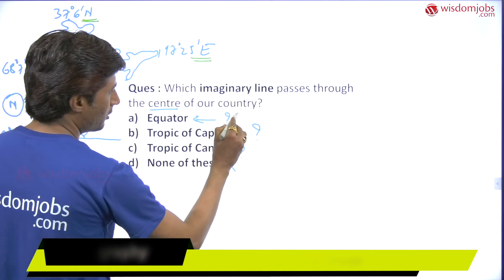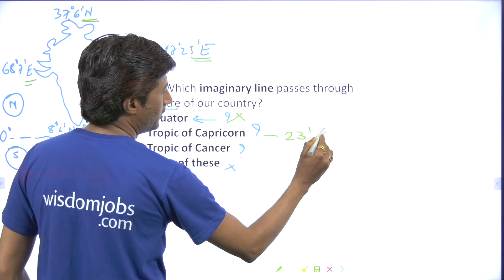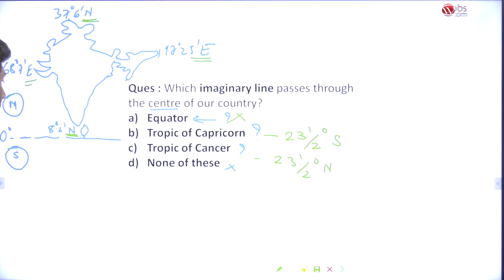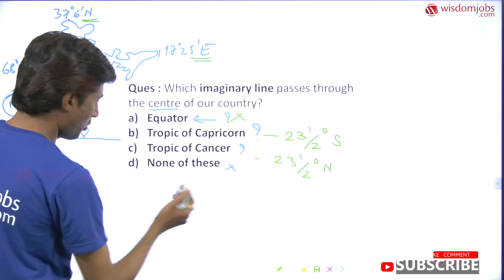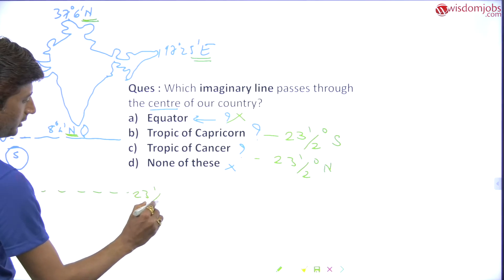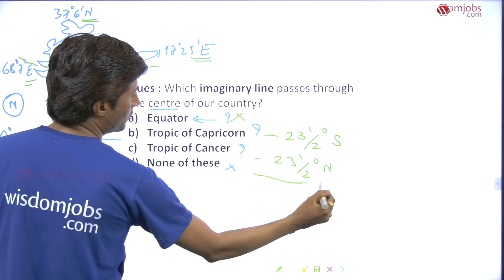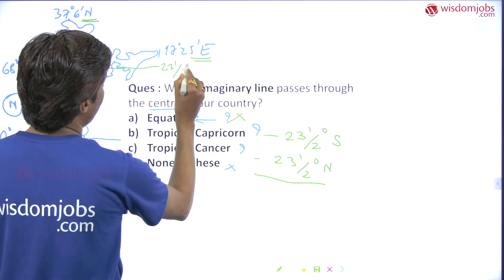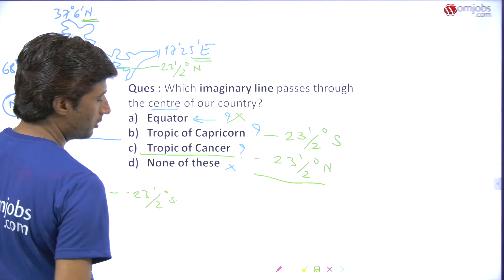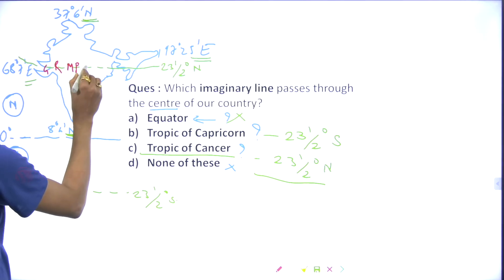The Tropic of Capricorn is at 23 and a half degrees south, while the Tropic of Cancer is at 23 and a half degrees north. The Tropic of Capricorn lies in the southern part of the equator, so it is eliminated. The imaginary line passing through the center of India at 23 and a half degrees north is the Tropic of Cancer — that is our answer.